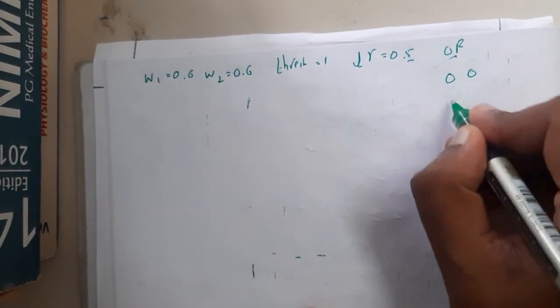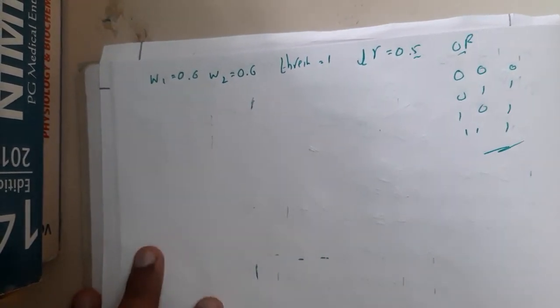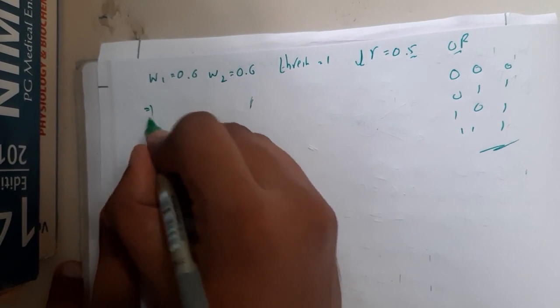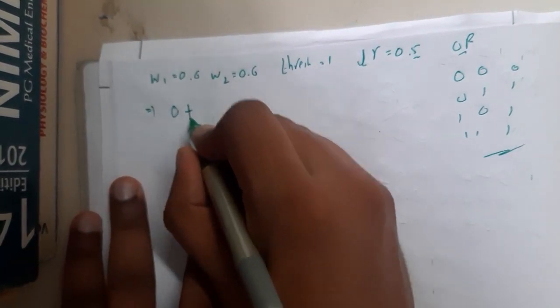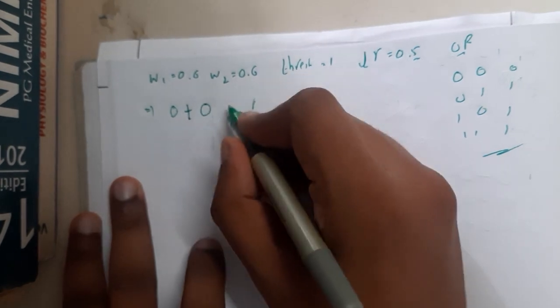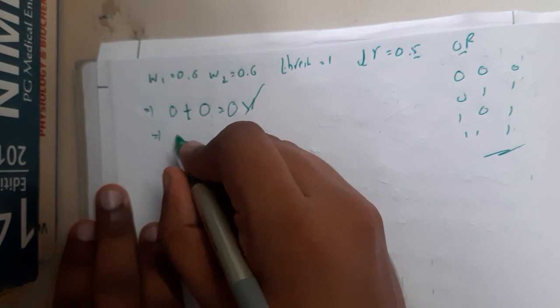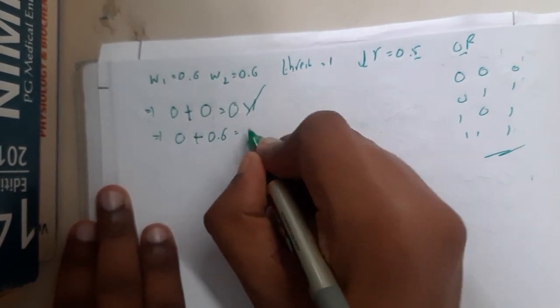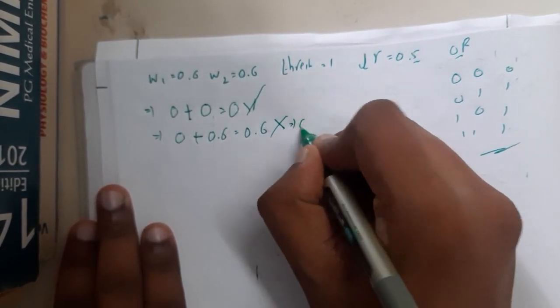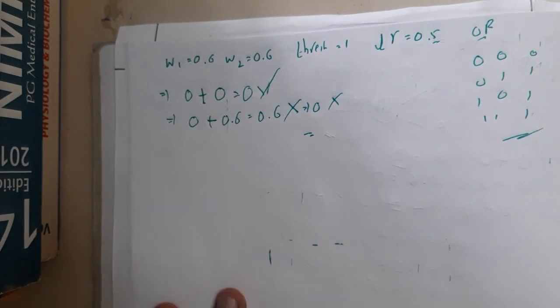So 0 0 gives 0, 0 1 gives 1, 1 0 gives 1, 1 1 gives 1. Initially, we start with 0 0. I'll be directly writing them step by step: 0.6 times 0 equals 0, 0.6 times 0 equals 0, and the result is 0, which is matching. Next, 0.6 times 0 is 0, 0.6 times 1 is 0.6, which is 0.6. But we need 1 here; it ended up with 0 but we need 1, so we have failed in the second case.